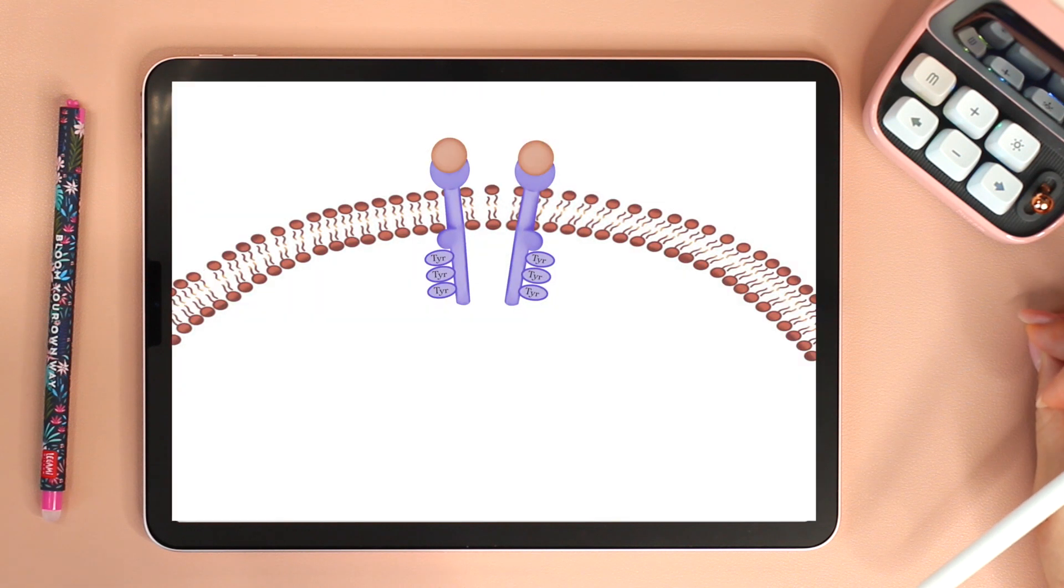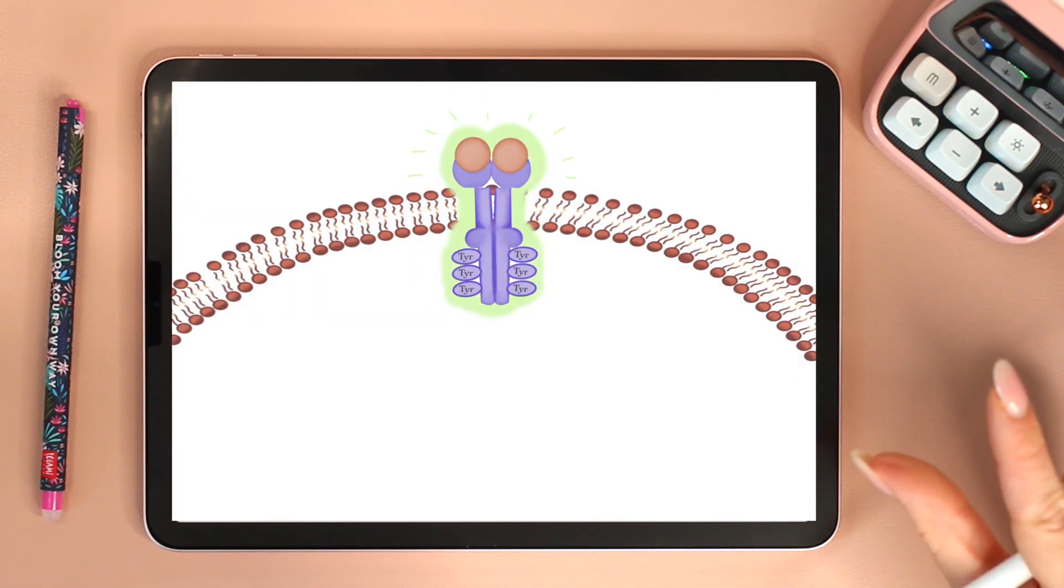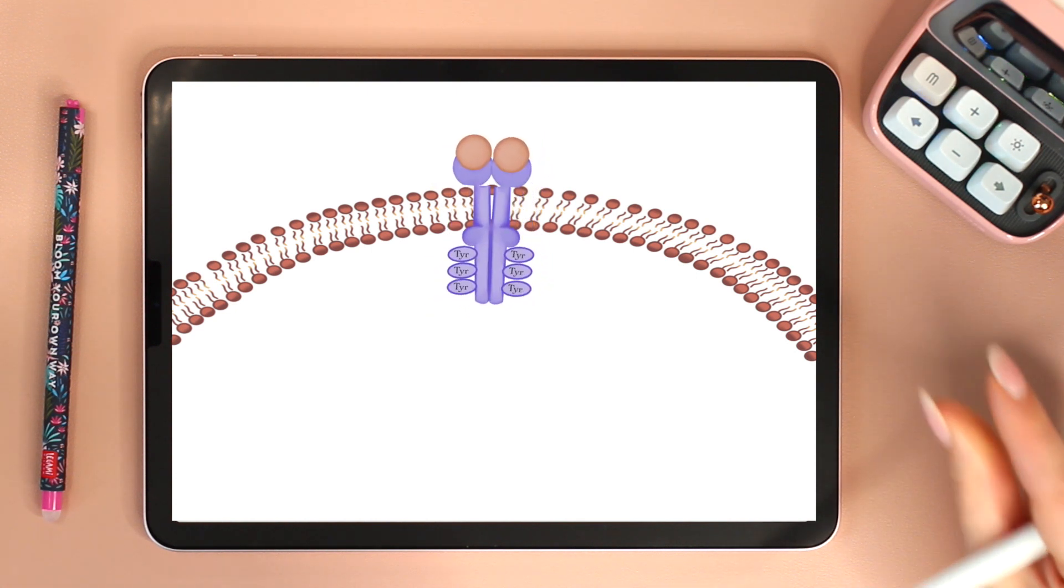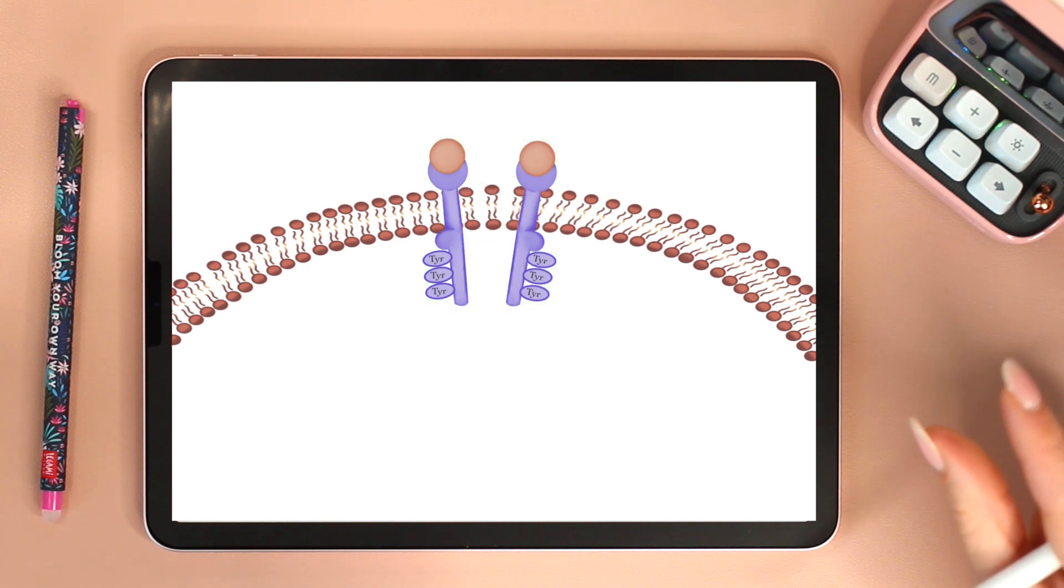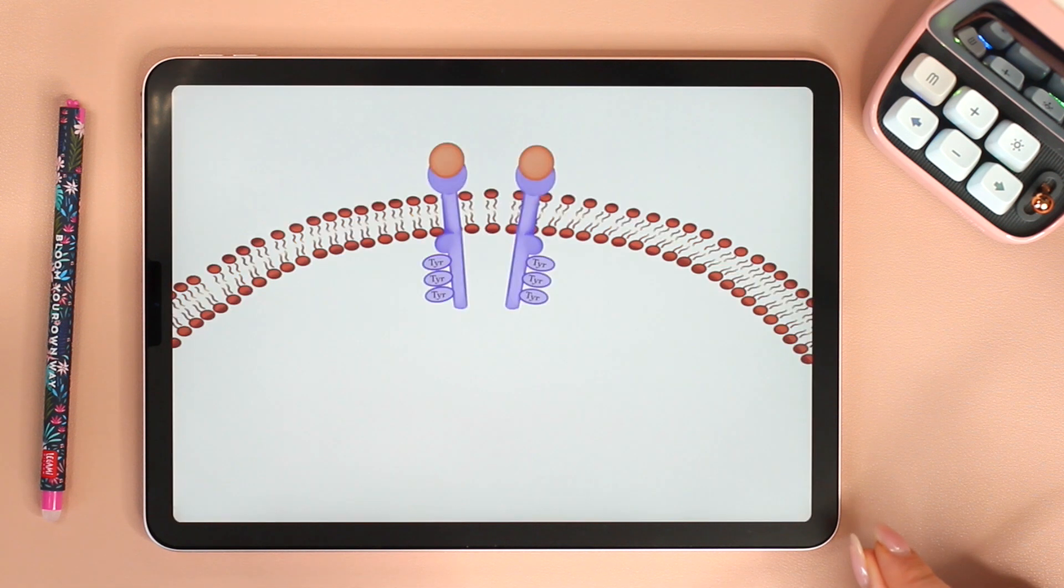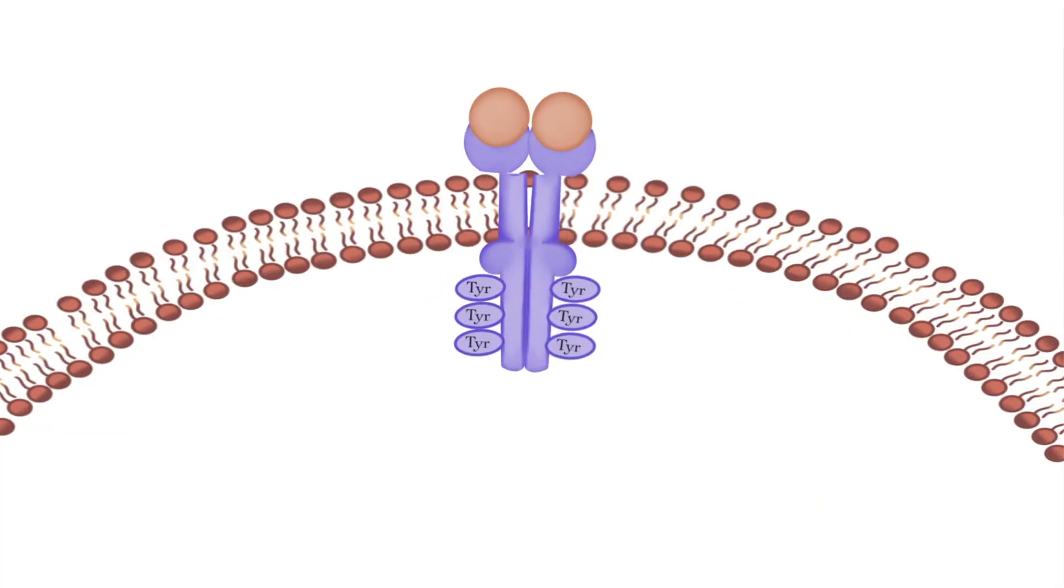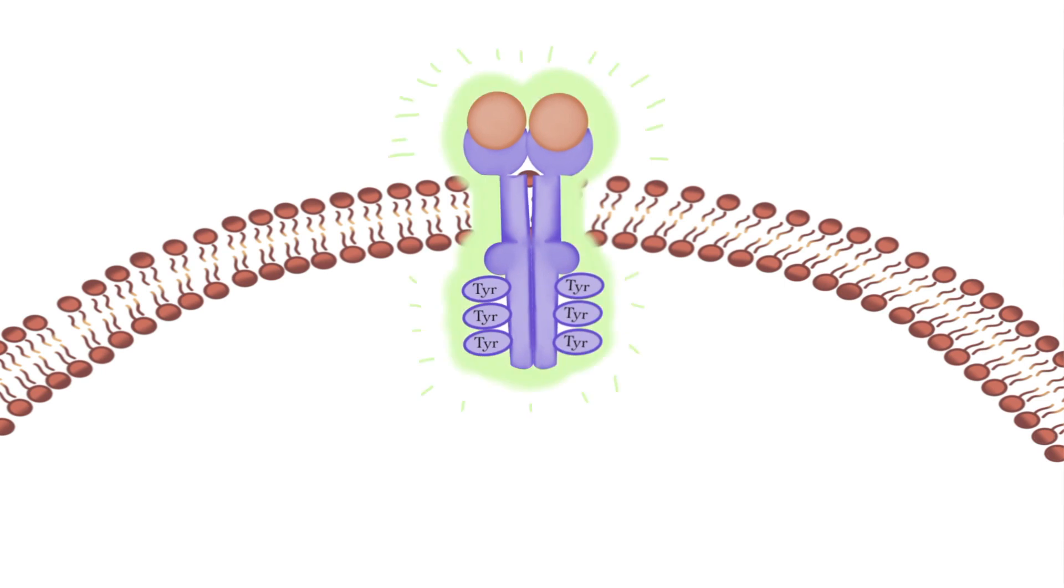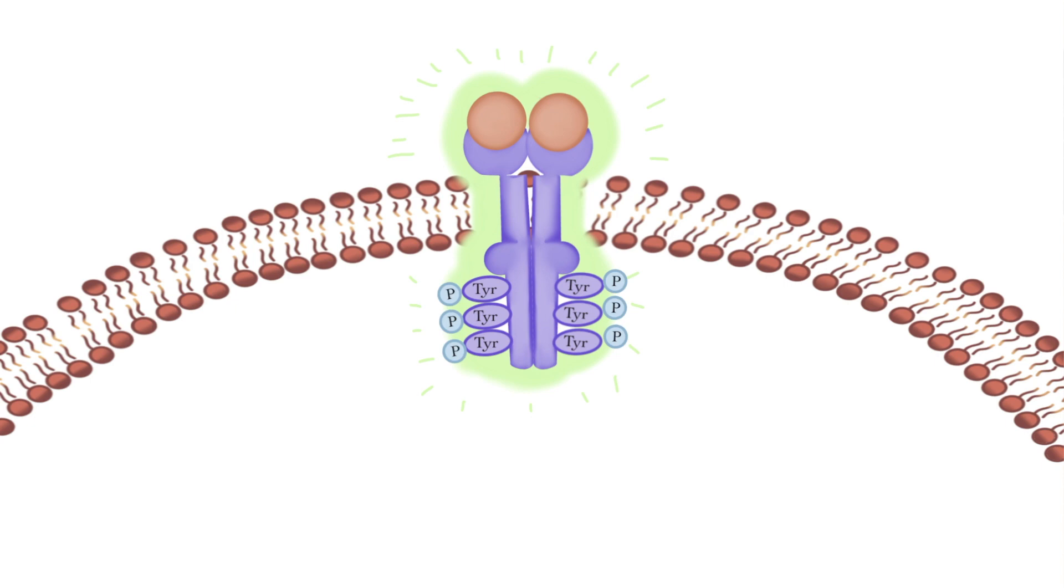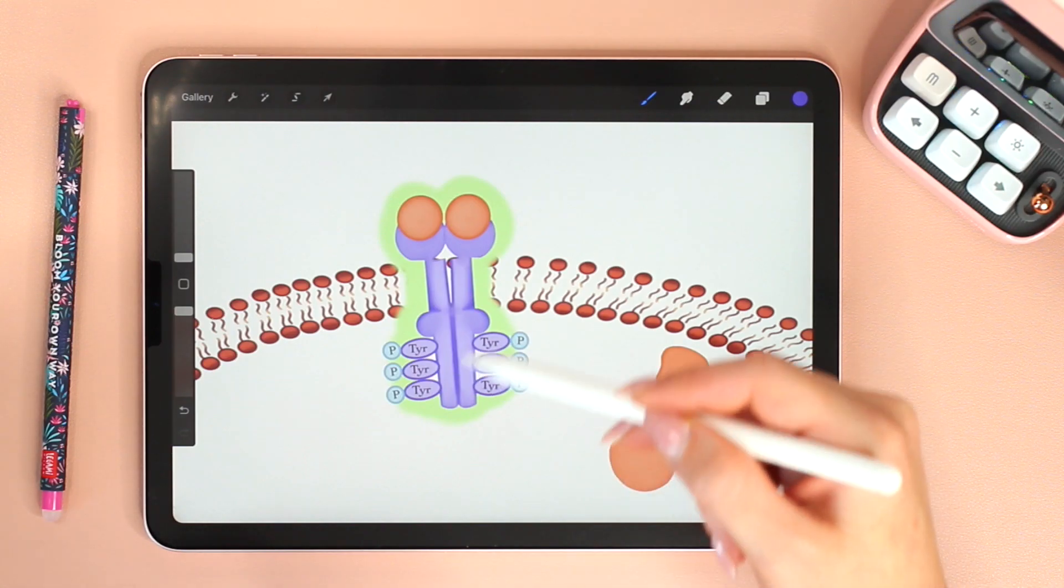When the signaling molecules bind to the receptors, the two monomers move and come together and form a dimer. The formation of the dimer activates the tyrosine kinases of each monomer. The tyrosine kinase of each monomer will add a phosphate from ATP to a tyrosine on the other monomer. Once the receptor is fully phosphorylated, it becomes active.